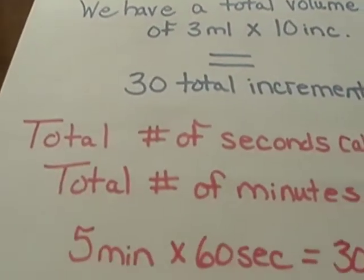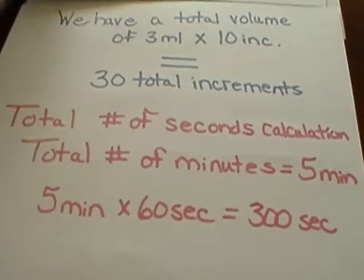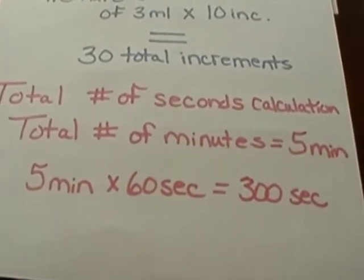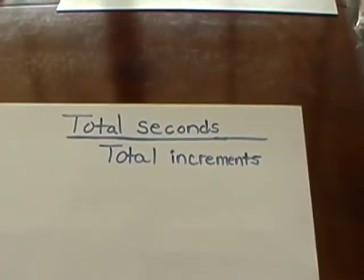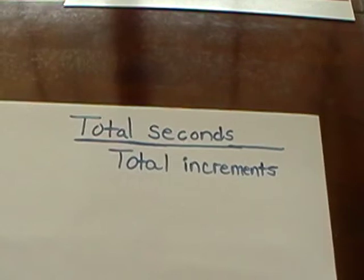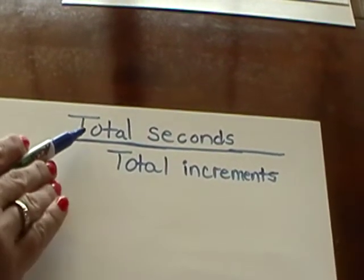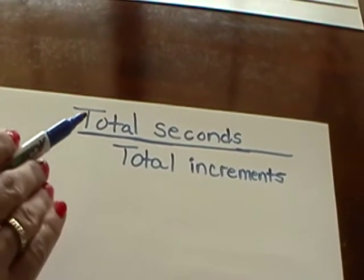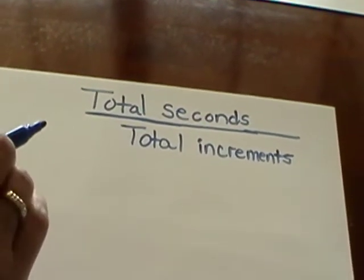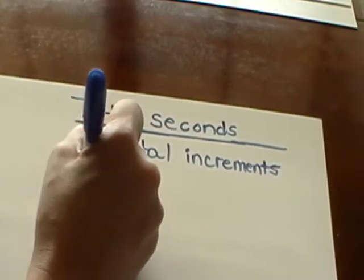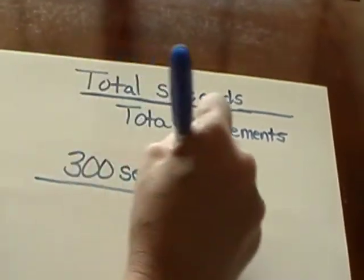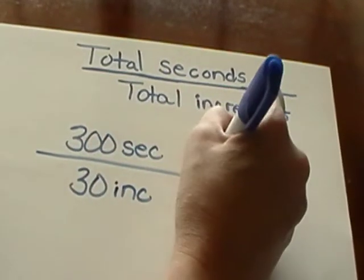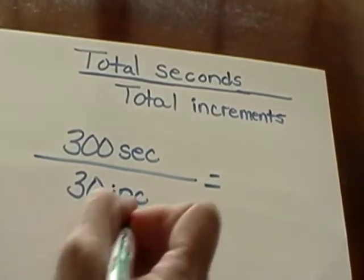Next we need our total number of seconds. Our total number of minutes is five; five minutes times sixty seconds equals three hundred seconds. Now that we've gathered all of our information we're ready to work our problem. For IV push, total number of seconds is our numerator over total number of increments as our denominator: three hundred divided by thirty equals ten.